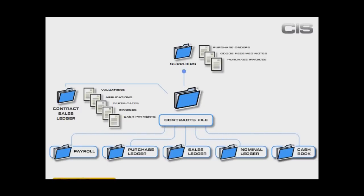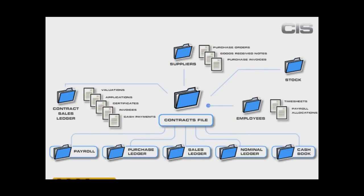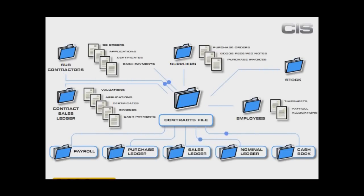You can have costs coming from suppliers in the form of purchase orders and purchase invoices. Not only will the contract be updated, so will the purchase ledger in your account system — from stock allocations and issues, from your employees' timesheets and associated payroll costs, and of course, not forgetting your subcontractors. Pegasus CIS will process all of these costs into your contracts.